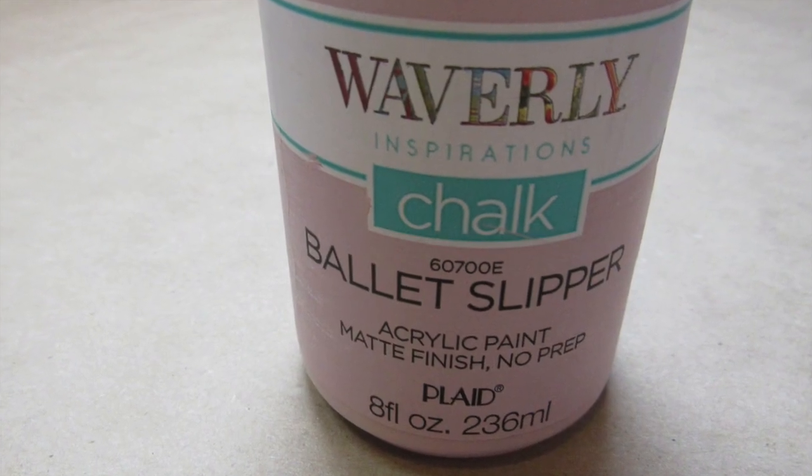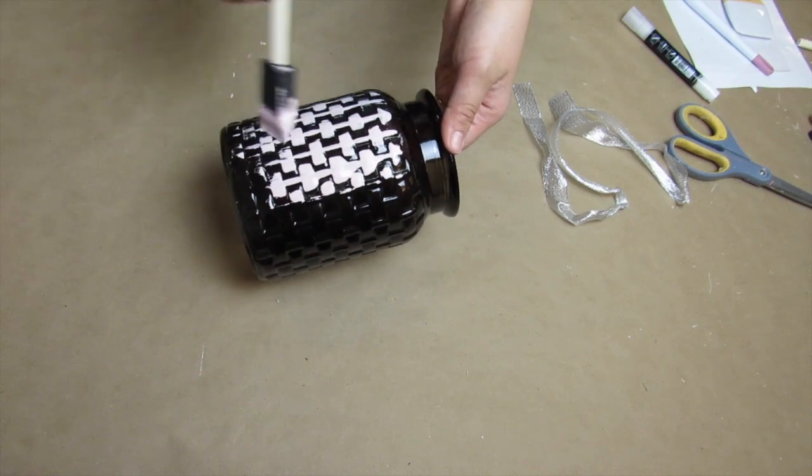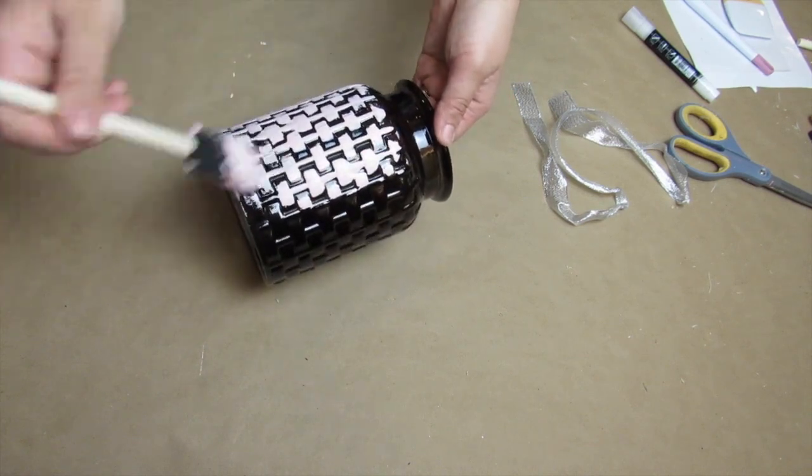Going back with the Waverly chalk paint in Ballet Slipper, I took off the ribbon that came on the vase and I am not going to paint the neck of this.